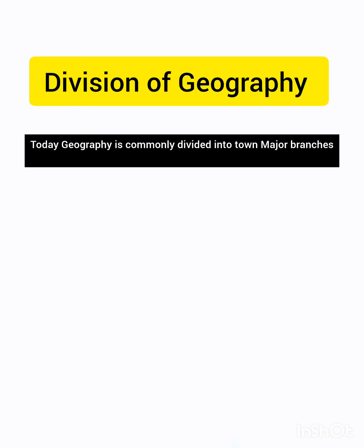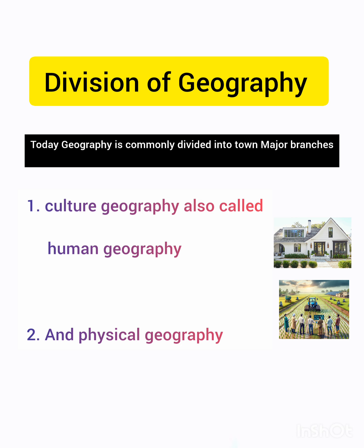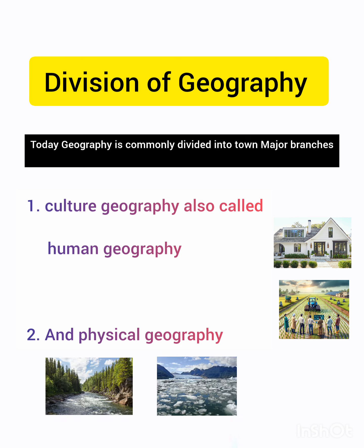Today geography is commonly divided into two major branches: cultural geography, which is also known as human geography, and physical geography.